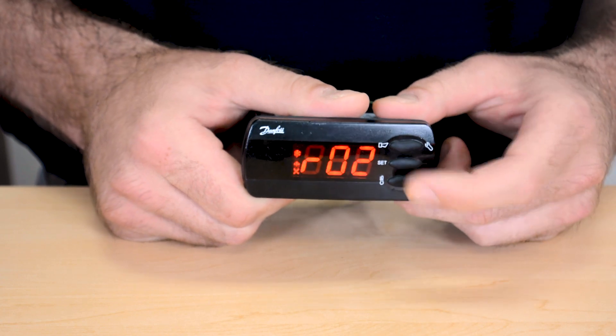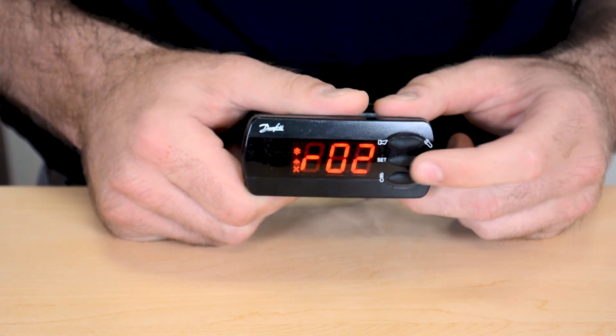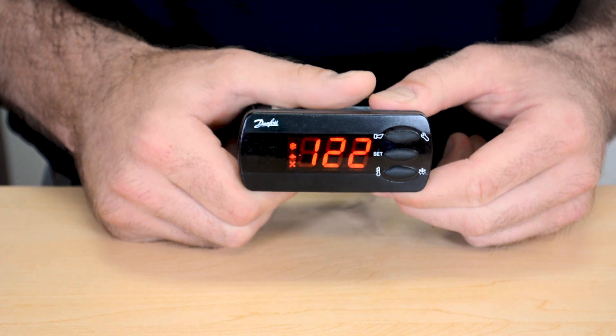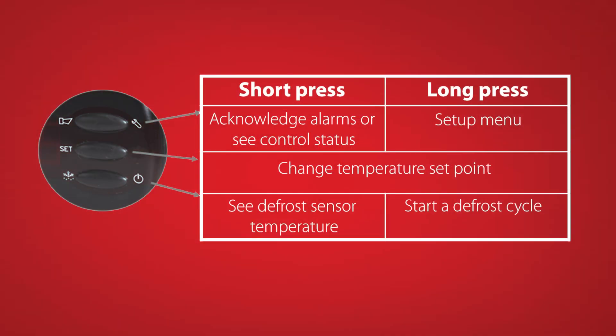From here you can go up and down using the top and bottom buttons and hit the middle button to go into and change that parameter. For a breakdown of the button operations, see the graphic on your screen.